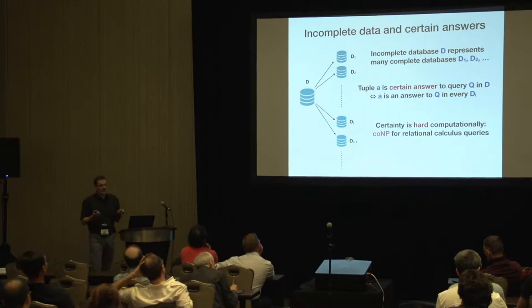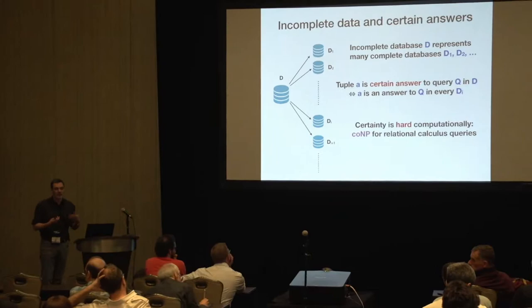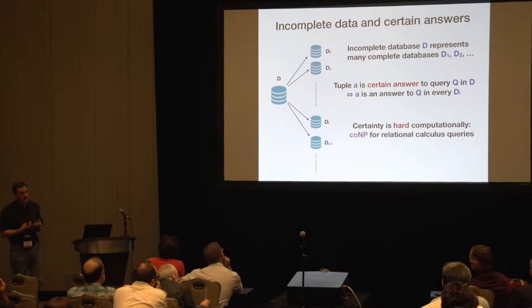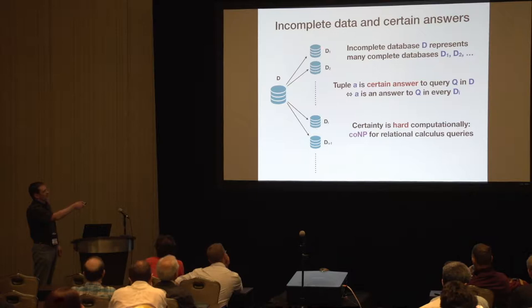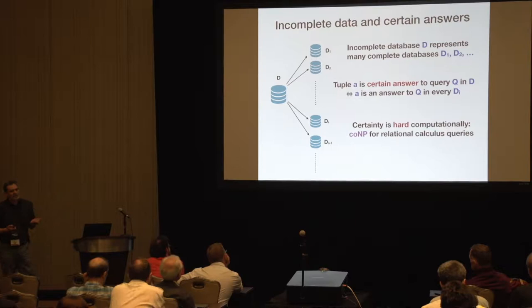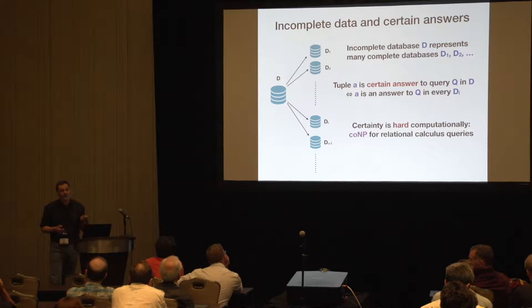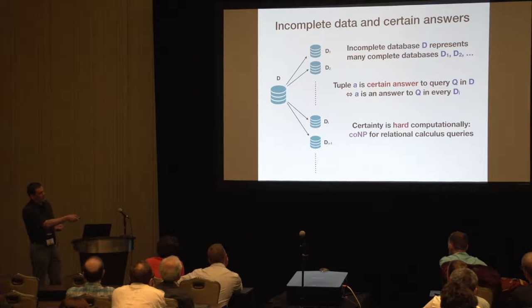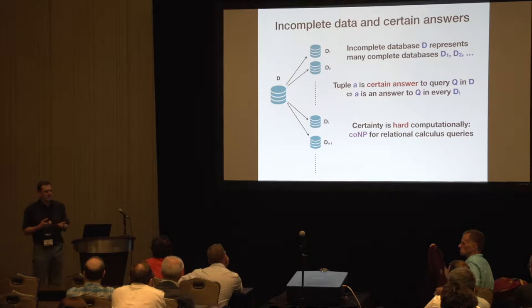What's an incomplete database? An incomplete database is some compact representation of many complete databases — there are many ways to complete or provide meaning to various incompleteness or uncertainty. The way we learn in the theory community to answer queries against incomplete databases: say we have incomplete database D, which can denote potentially infinitely many different databases D_i, and we give a certain answer. A tuple is a certain answer to a query Q in an incomplete database D if it is an answer in every single database D_i.